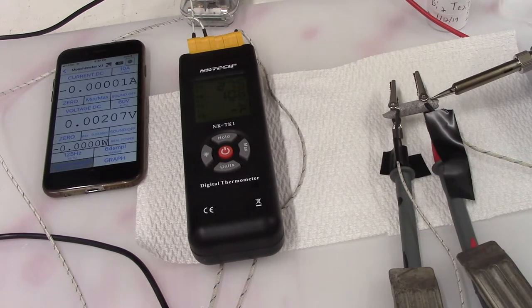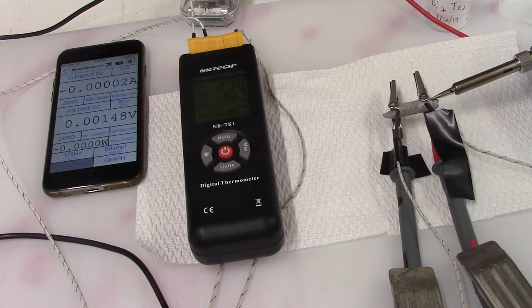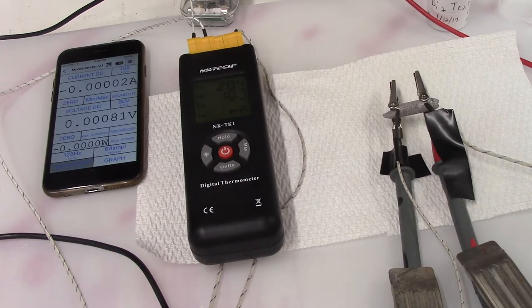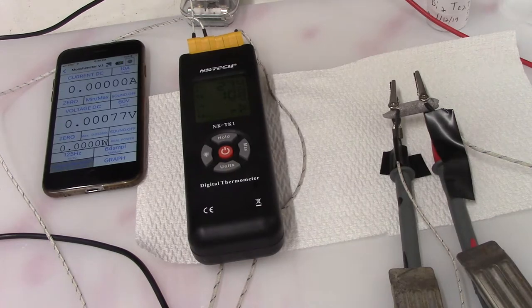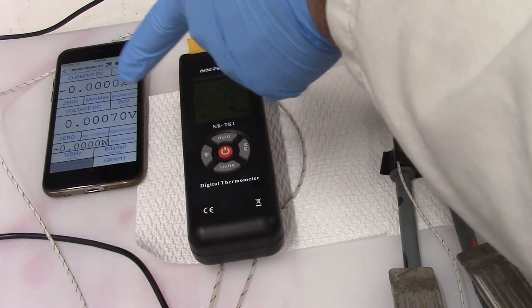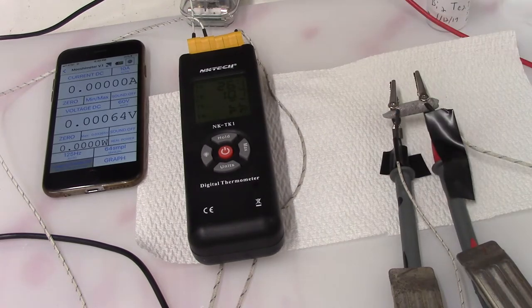So when you heat one side, the electricity or the electrons will flow in one direction, and then as it cools back down—what's kind of fascinating about this—so as this cools back down, the voltage will go back down, and then the temperature will also go back down.